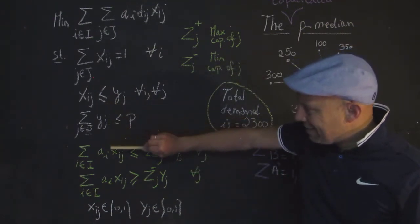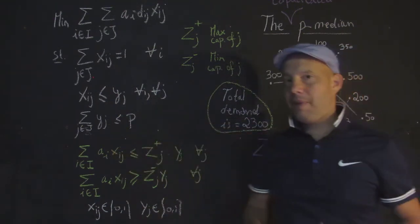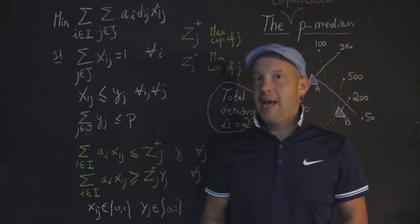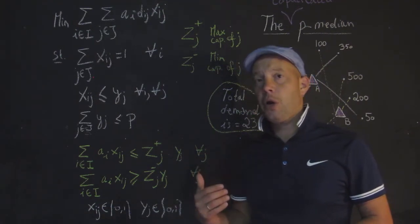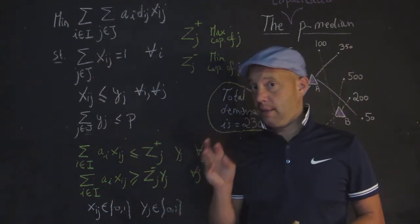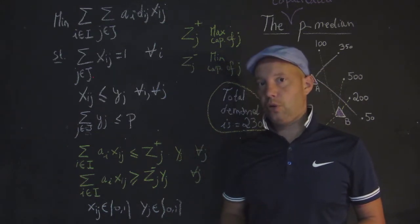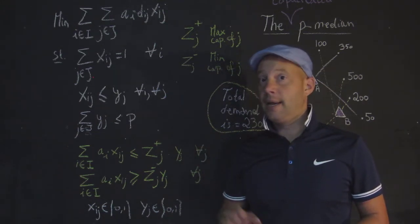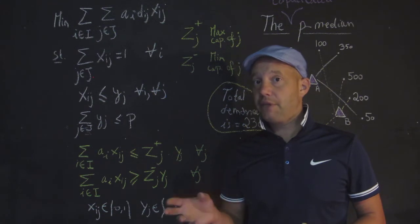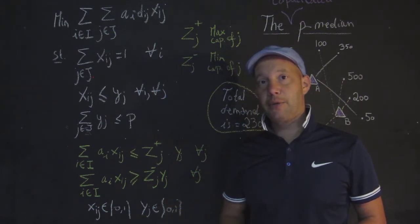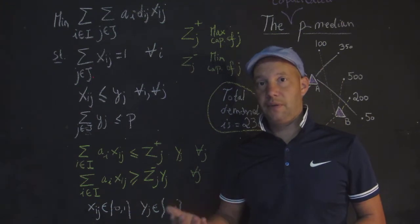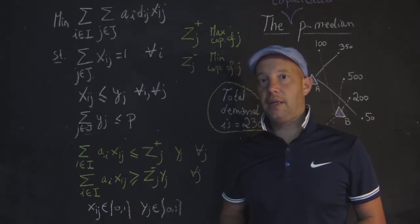And then at the end you have these integer constraints that we have seen before. So the addition of even that one constraint makes the problem much more difficult and can lead to those situations, as I have mentioned earlier, where we have demand that is not allocated to the closest facility. Now, if I have a chance, I will demonstrate this within the GIS environment or maybe within the CPLEX optimizer.